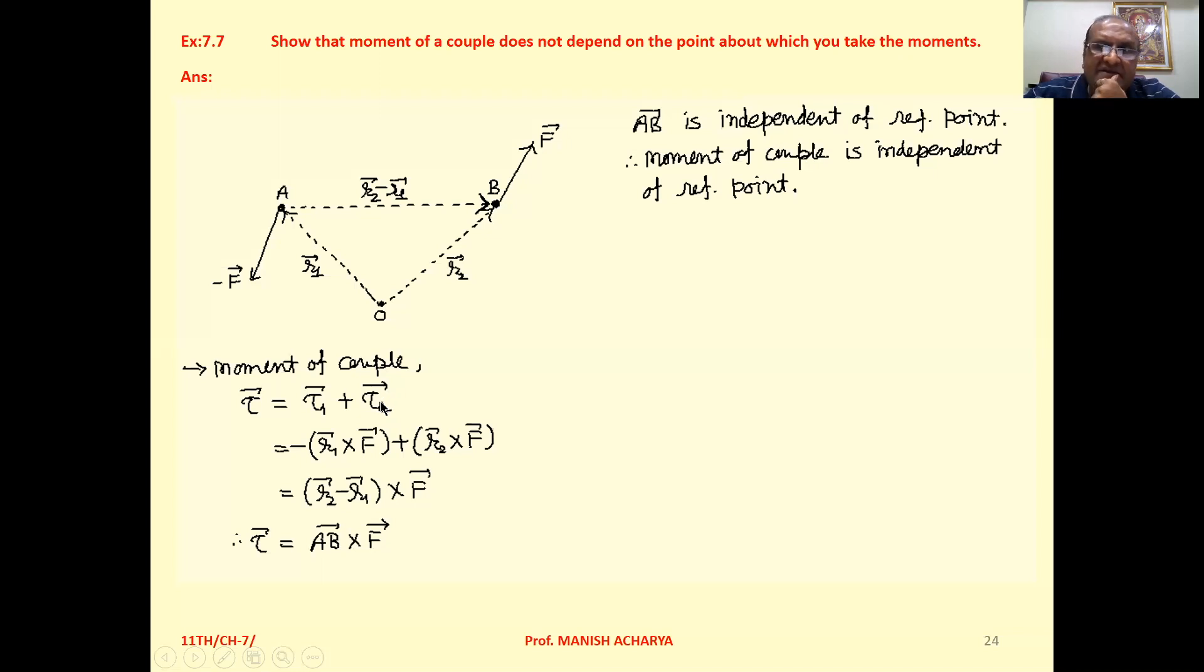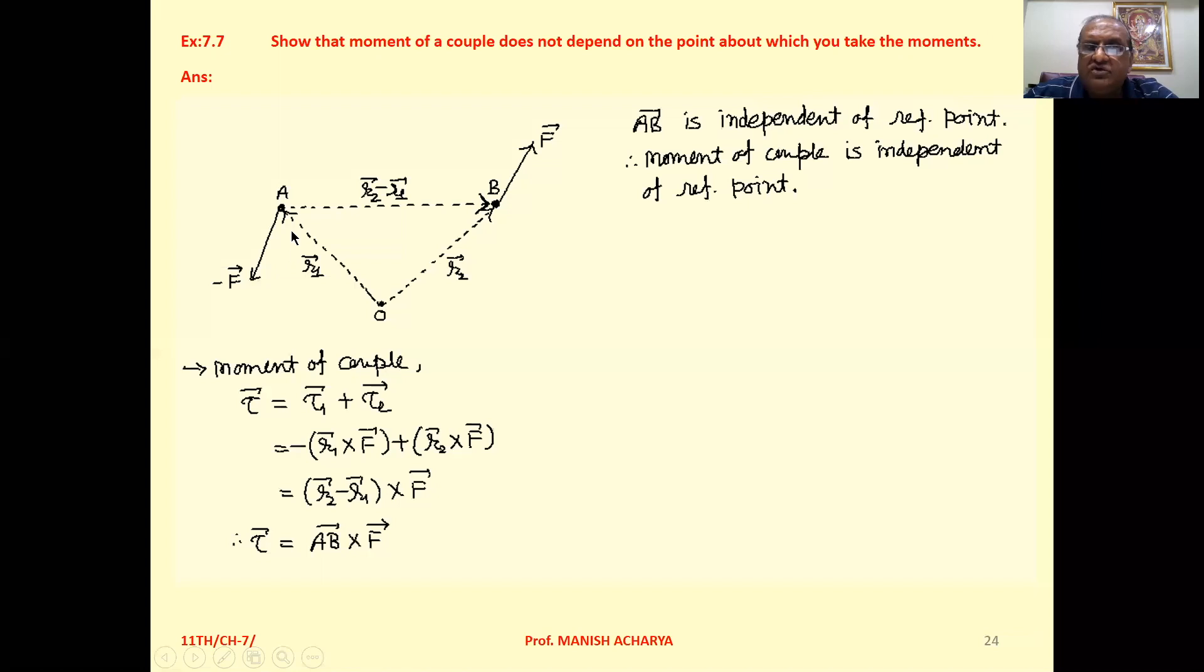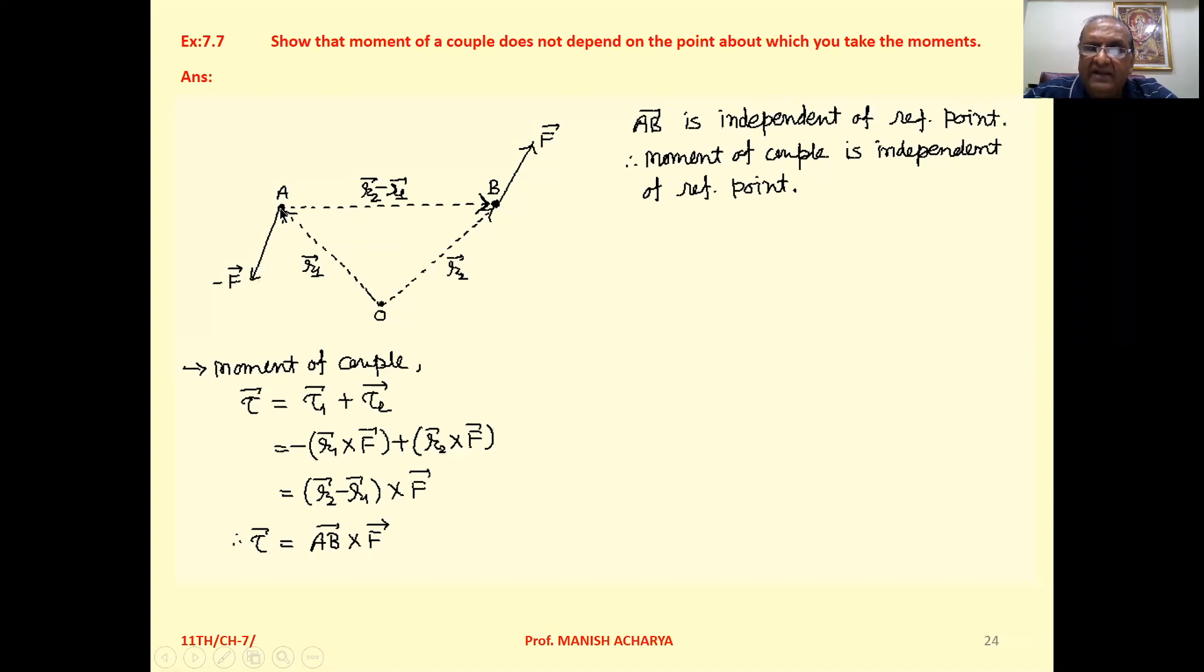Now as per definition, torque that is R cross F. So tau 1 at A, that is R1 cross minus F. So we can write minus R1 cross F. Plus tau 2, that is R2 cross F. We can take F common. So R2 minus R1 cross F.